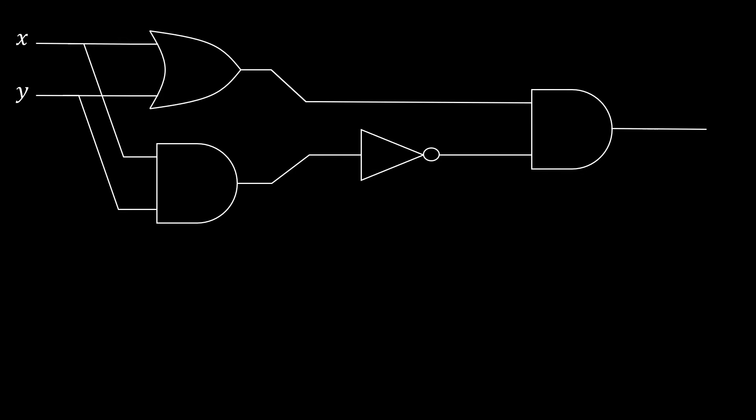To understand this circuit, we label each wire with its value. The top OR gate computes its output and feeds this value as input to the rightmost AND. The bottom gate computes the conjunction of the two inputs. This value is then negated by the NOT gate.